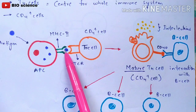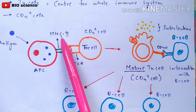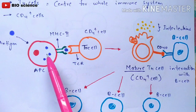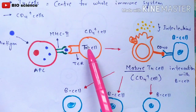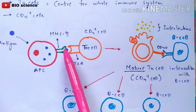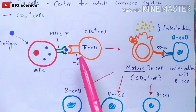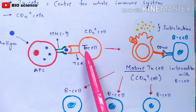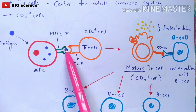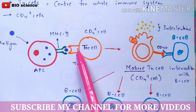The MHC class 2 molecule places the antigen on the surface of the antigen presenting cell — the blue color shown here represents the antigen. The T helper cell, also called the CD4 plus cell, comes and binds to this antigen presenting cell via T cell receptors present on the surface of the TH cell, binding specifically to the MHC class 2 molecule which is displaying the antigen.